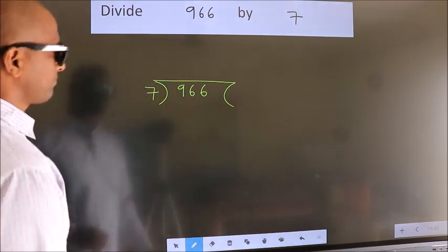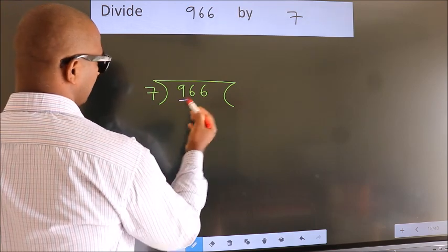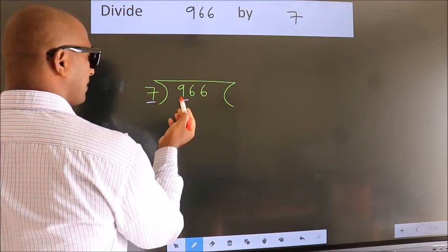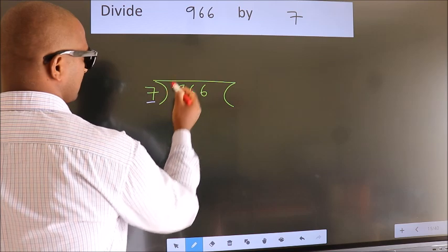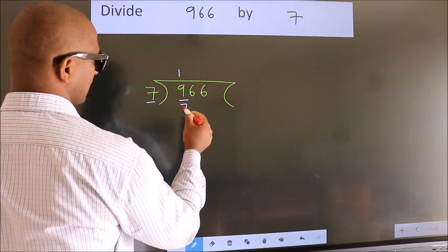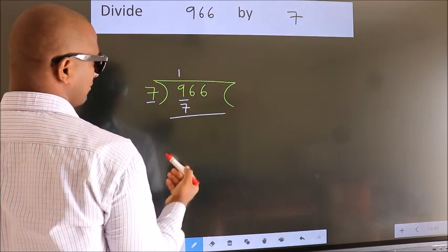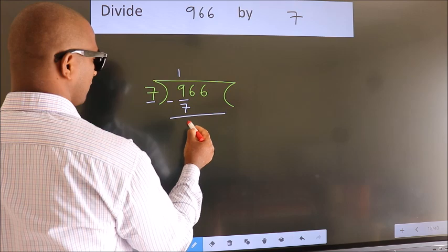Next. Here we have 9, here 7. A number close to 9 in the 7 table is 7 once, which is 7. Now, we should subtract. We get 2.